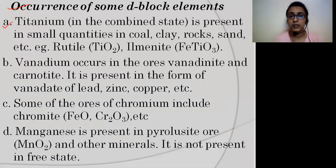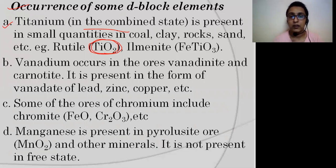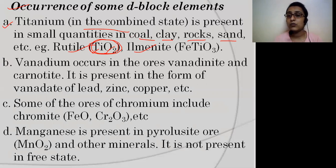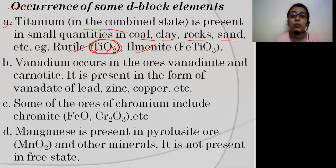Please remember the difference between ores and minerals: all ores are minerals but all minerals are not ores. Ores are those minerals from which we can extract metal profitably. Vanadium's ores include vanadinite and carnotite. It is also present as vanadate of lead, zinc, and copper. Some ores of chromium include chromite — remember, chromium's ore is chromite.